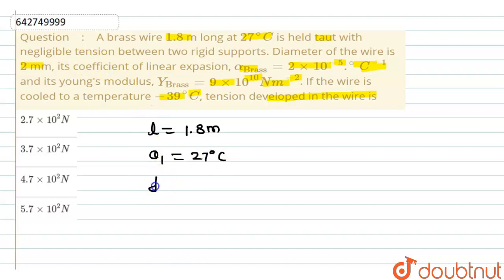Diameter of the wire is 2 mm, which means its radius is diameter divided by 2, that is 2 mm divided by 2 which equals 1 mm, that is 1 into 10 raise to the power minus 3 meter.